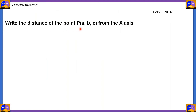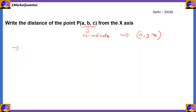Write the distance of the point P from the x-axis. A, B, C are the coordinates. When we compare them with x, y, z, you'll notice that x equals A, y equals B, and z equals C. For a point P, its distance from the origin on the x-axis is A.